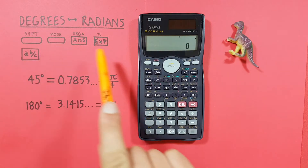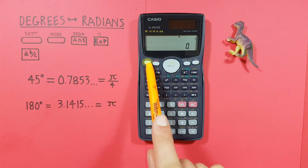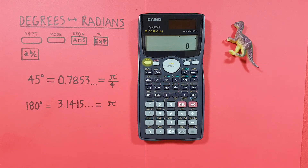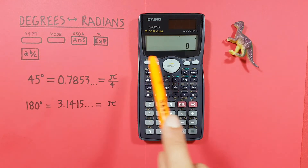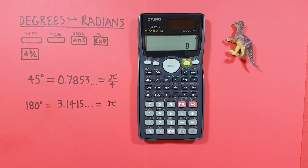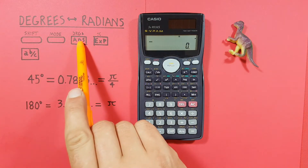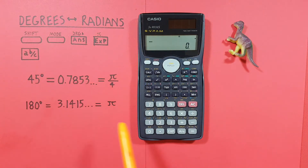The mode key, located here. And the answer key, with the shift function of DRG — degrees, radians, gradians conversion — located here.